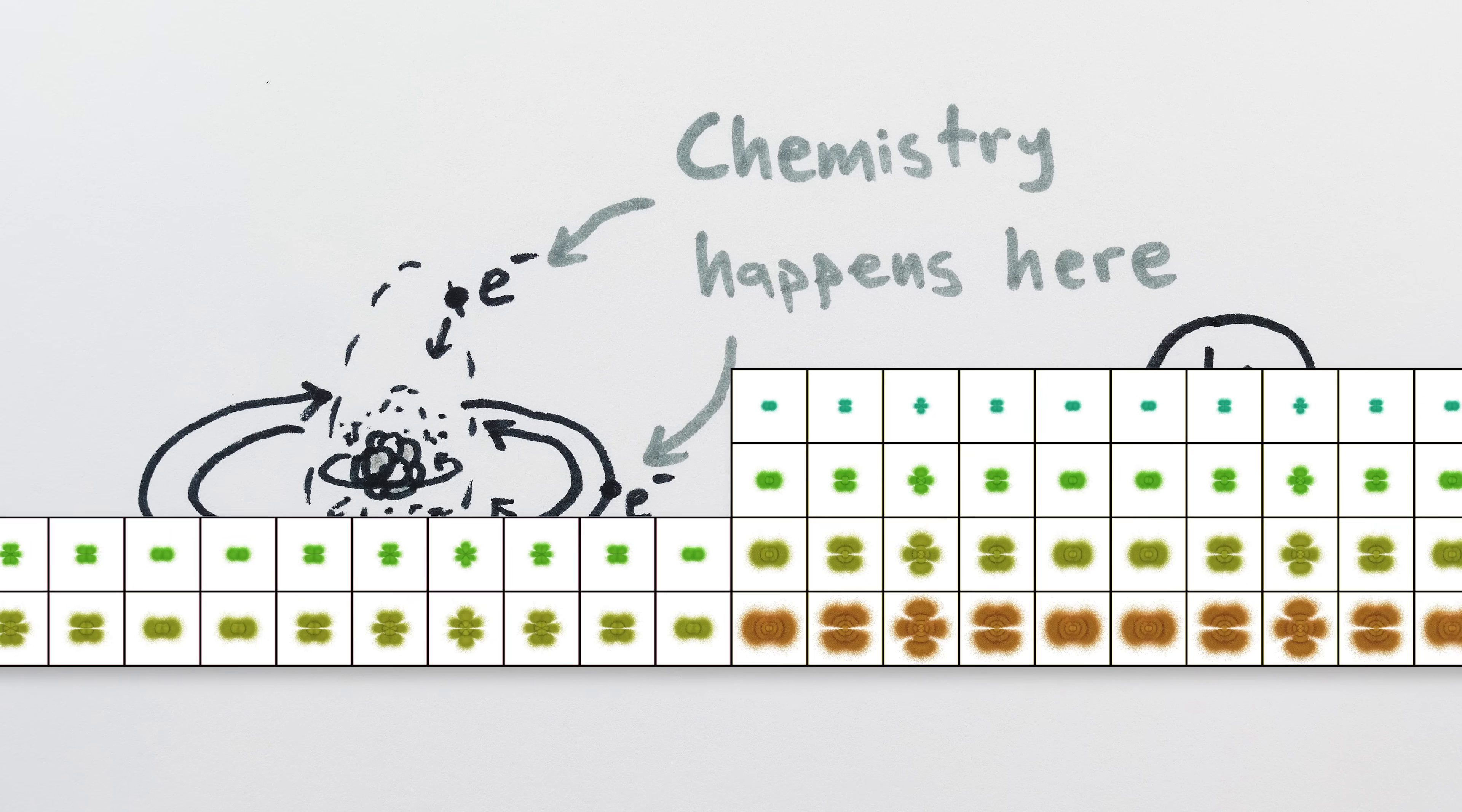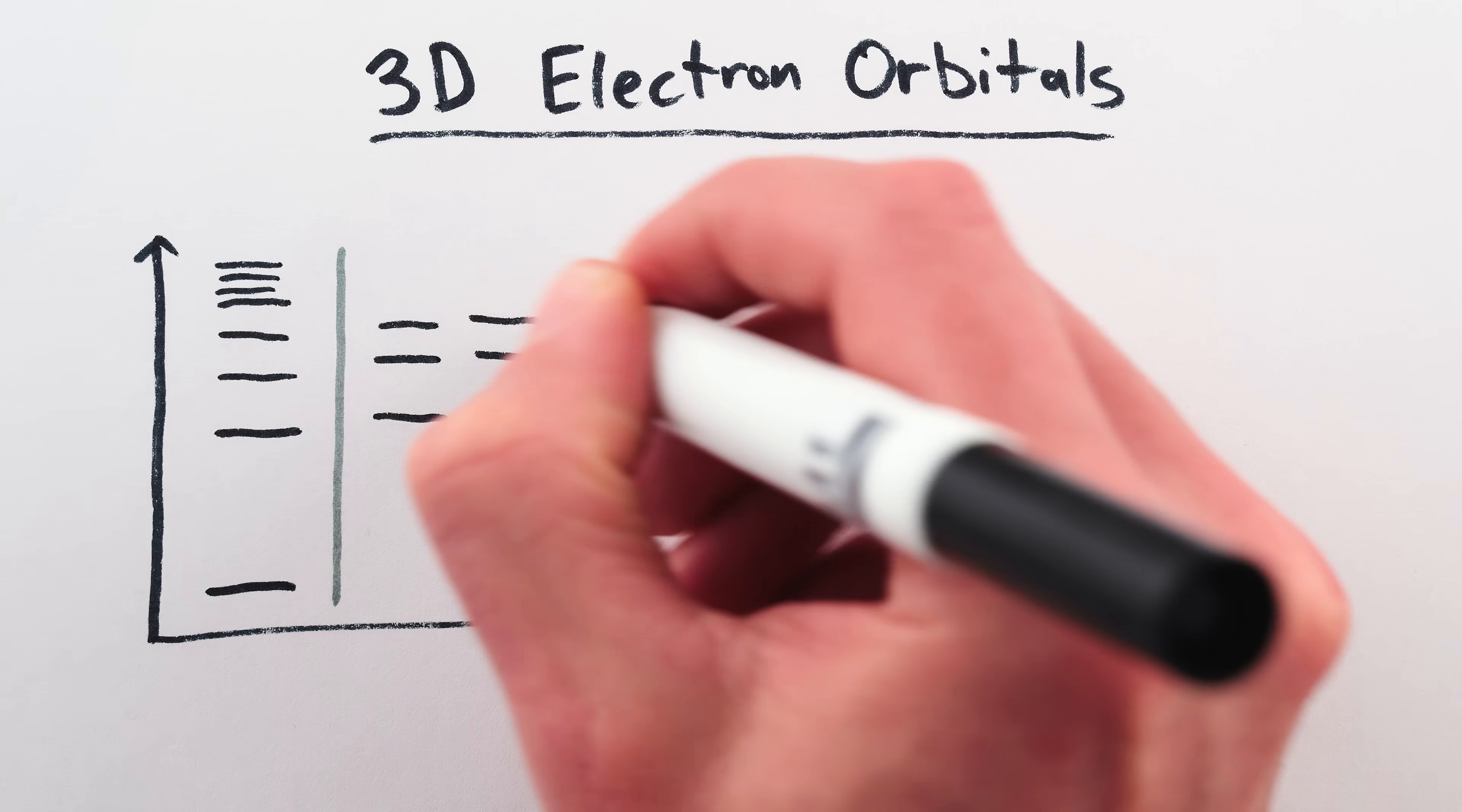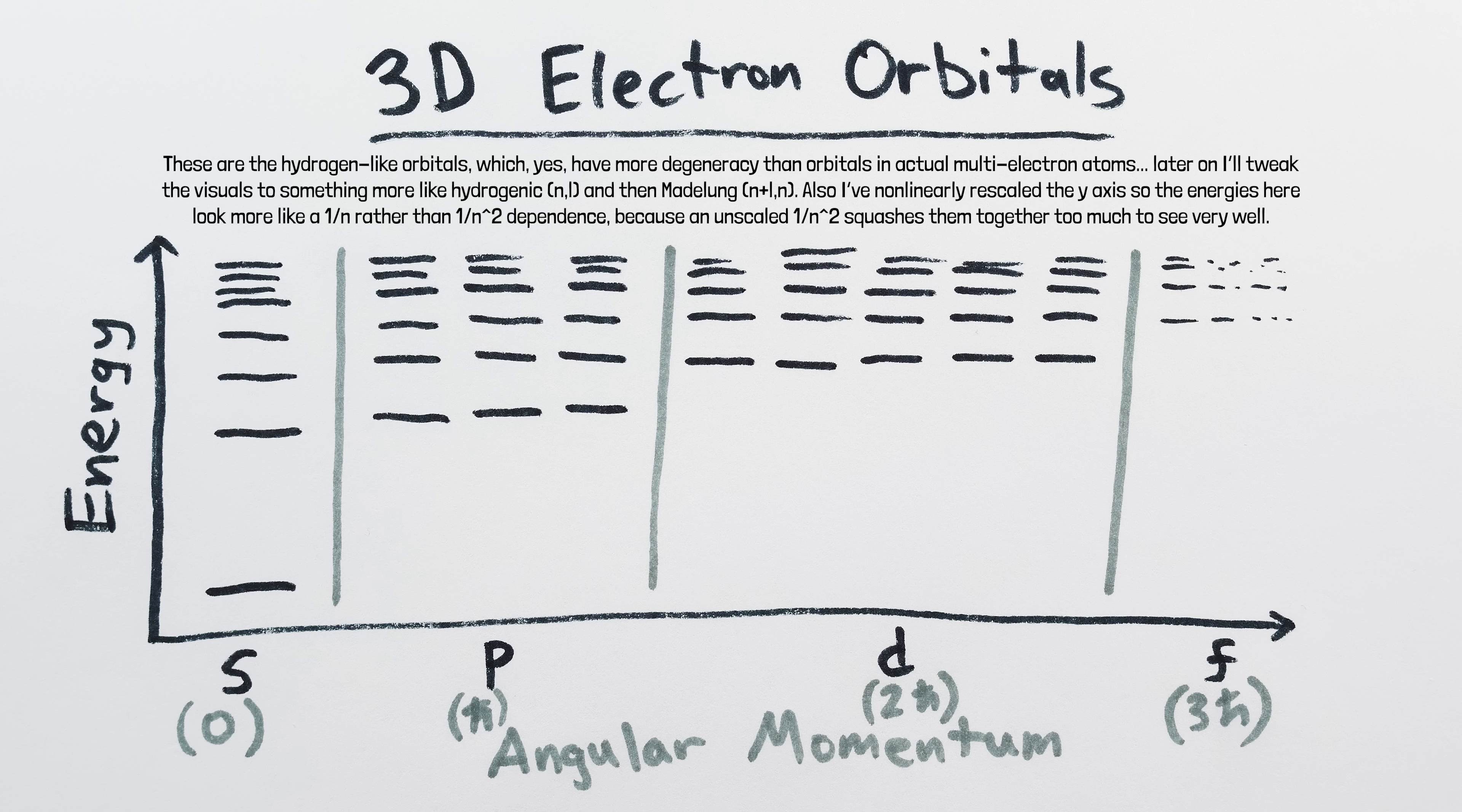So roughly speaking, the periodic table is a diagram of which orbital happens to be the outermost one for each atom. In 3D, the possible orbitals of an electron have energies that look something like this. Left to right means orbiting with more angular momentum, and bottom to top means orbiting with more energy, and generally more distance.